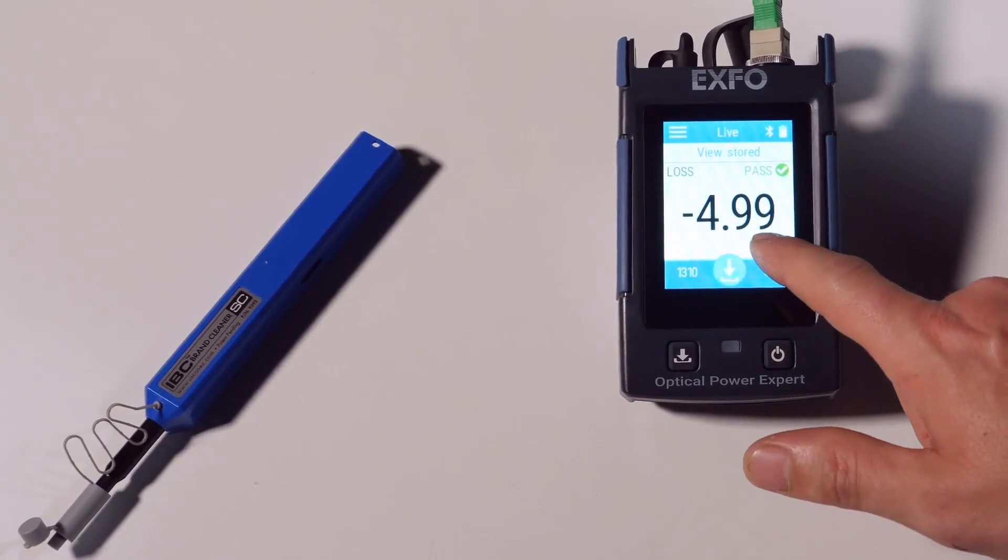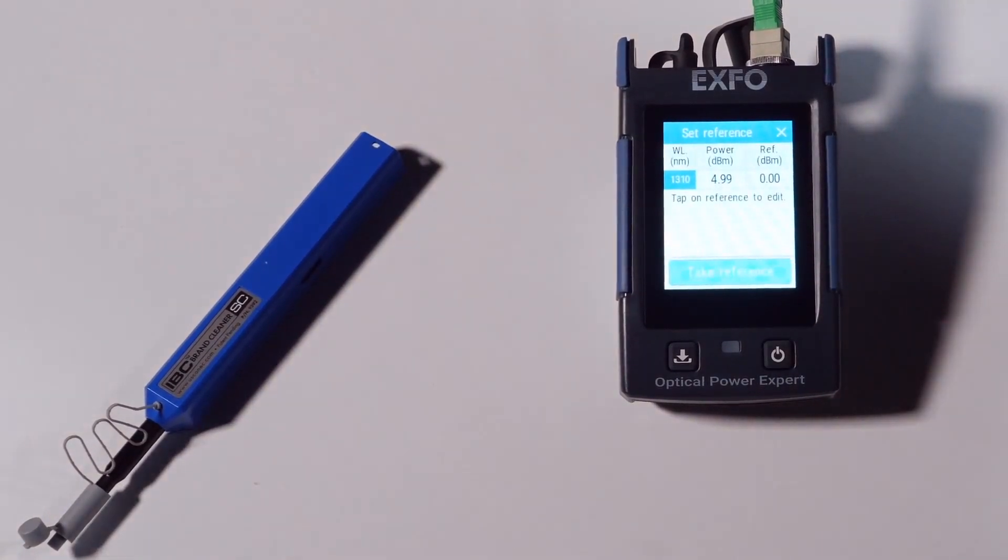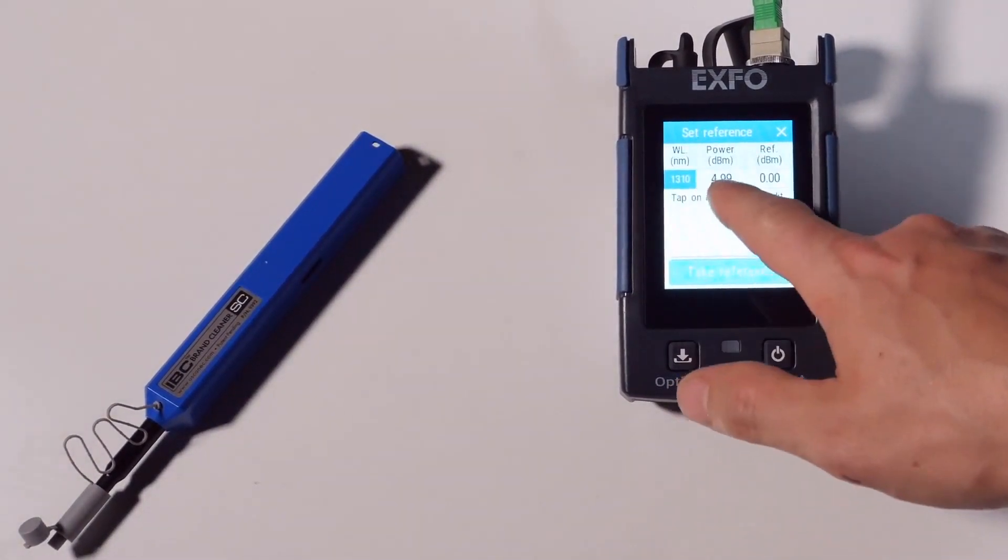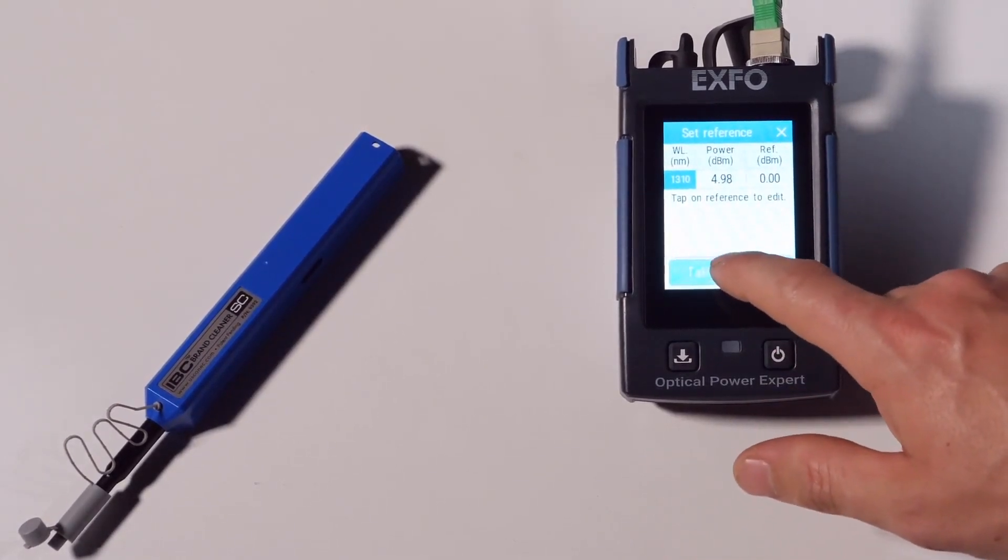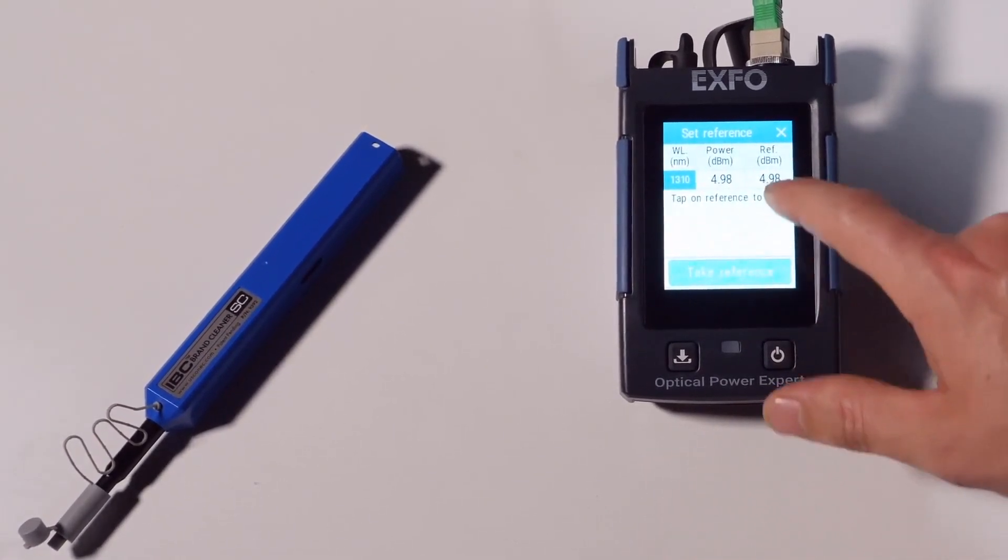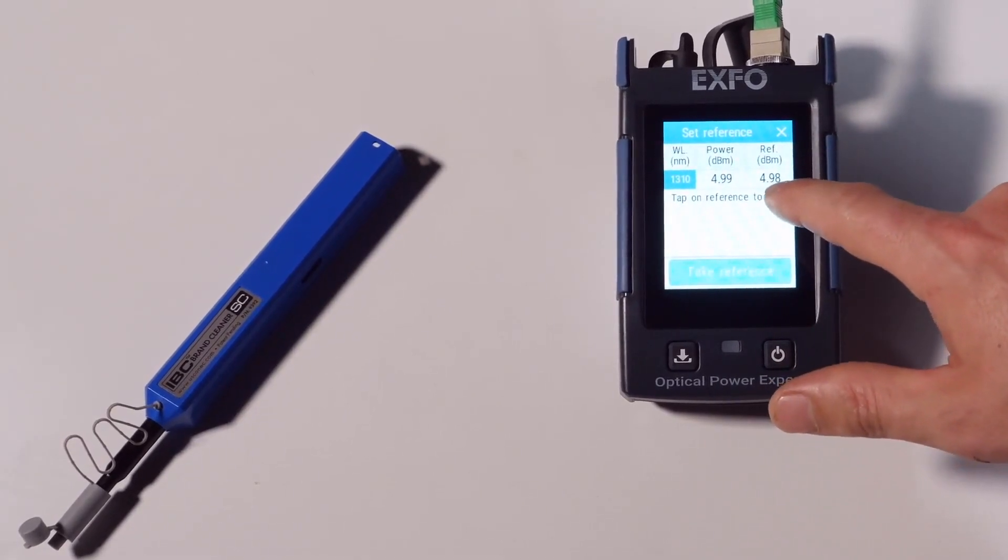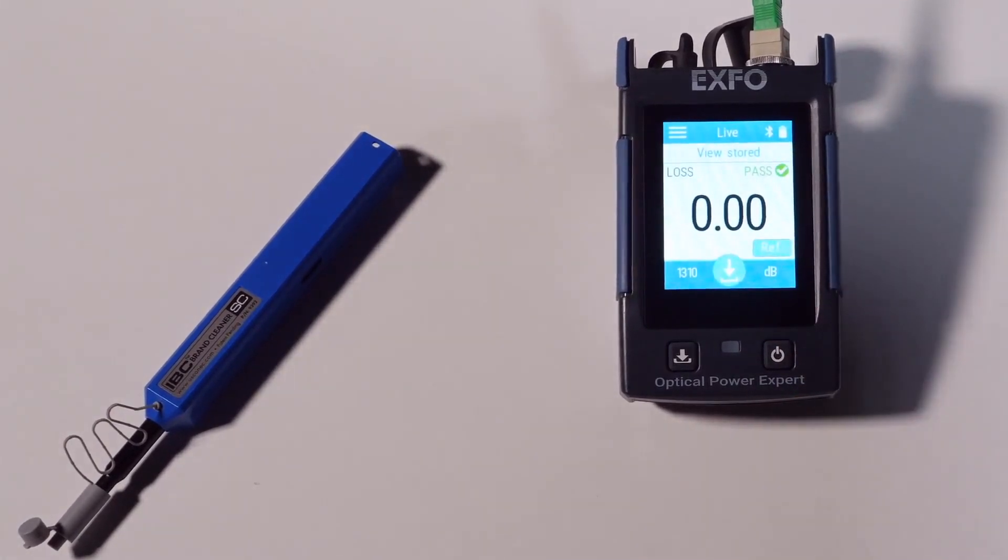Now it's simply a matter of clicking on the reference. As you can see, the reading of the current power is 4.98. And as we take that reference, you can see that it subtracts that same value. We're now back to 0 dB.